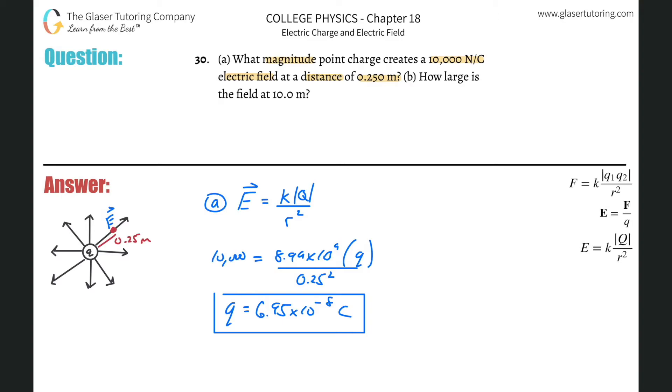And then how about now letter B? How large is the field at 10 meters? So what's the only thing that's going to change? The only thing that's going to change is the distance. So instead of 0.25, it now becomes 10.